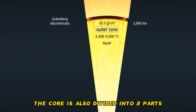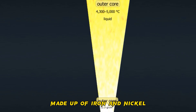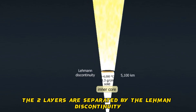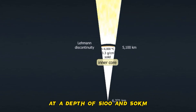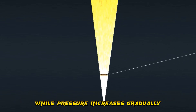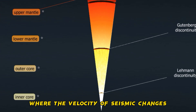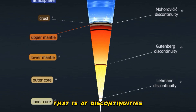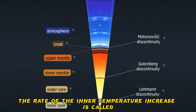Situated below the mantle, the core is also divided into two parts: the liquid outer core, consisting of molten metals, and the solid inner core, made up of iron and nickel. The two layers are separated by the Lehmann discontinuity at a depth of 5,150 kilometers. Density, temperature, and pressure increase with depth. While pressure increases gradually, density changes abruptly at discontinuities, where the velocity of seismic waves also changes abruptly.